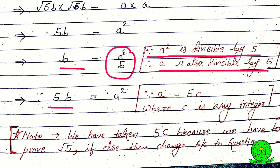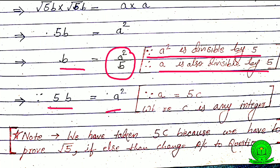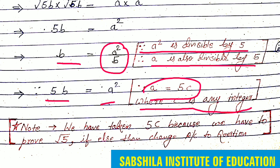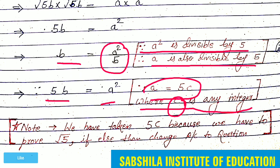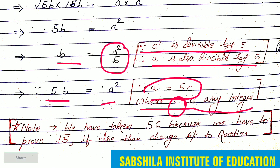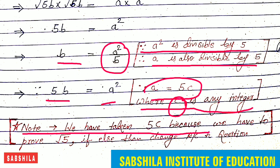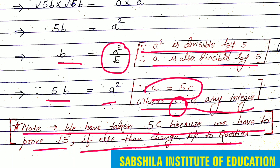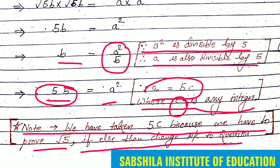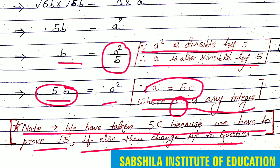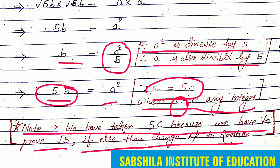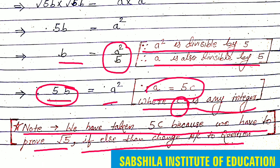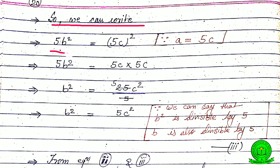From 5b squared equals a squared, we can write a equals 5c, where c is any integer. Note: we take a equals 5c because we are proving root 5. If we had to prove root 3, we take a equals 3c; for root 7, a equals 7c — we change it according to the question.